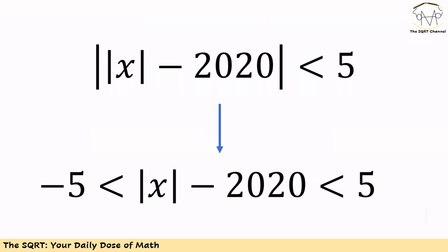Let's start with simplifying the equation that we have. To remove the first absolute sign, we need to write the equation as |x| - 2020 is greater than -5 and less than 5.